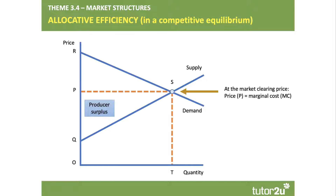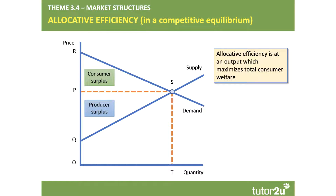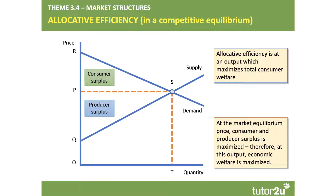At that equilibrium, there's some producer surplus — the area above the supply curve and below the price — producer surplus equals area QPS. There's also consumer surplus: the difference between what people are willing and able to pay and the price they actually pay, which is area PRS. Adding consumer and producer surplus together gives us community surplus — a measure of overall economic welfare in a market. When the market clears and price equals marginal cost, we're maximizing consumer and producer surplus, so allocative efficiency is the output which maximizes total welfare.